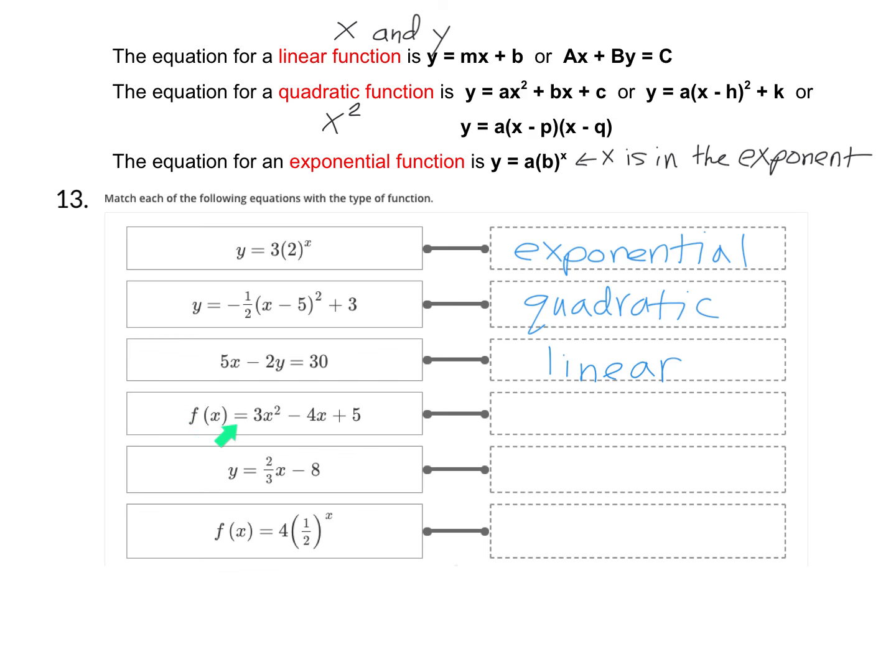Here we have f of x equals 3x squared minus 4x plus 5. The key is it has that x squared, which makes it quadratic.